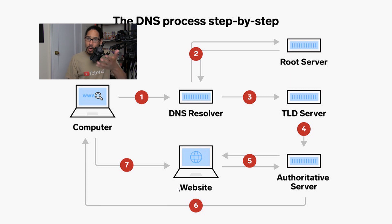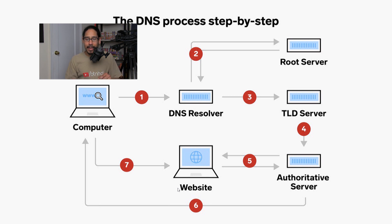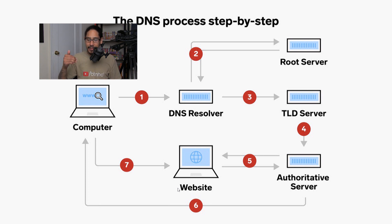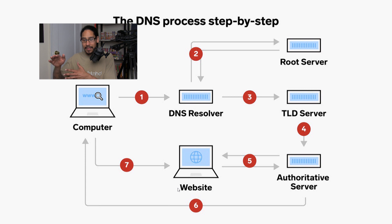Here are the seven steps. Step one — you are the user on your computer or laptop. You open up your favorite browser and type in google.com or Yahoo or whatever. It goes to the DNS resolver — step two. The DNS resolver goes to the root server, which responds back to the DNS resolver. The resolver then goes to the TLD server, which goes to the authoritative server. The authoritative server goes to the website, gets the response, and then sends it back through the authoritative server to your computer to load your website. Those are the seven steps.